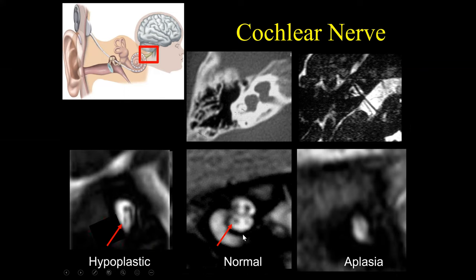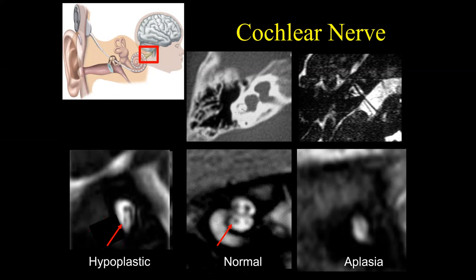On sagittal images through the internal auditory canal, with posterior to the left and anterior to the right, we identify the facial nerve superiorly, the cochlear nerve inferoanteriorly, the superior vestibular nerve, and the inferior vestibular nerve. A normal cochlear nerve is present in the first case. On the left side, the cochlear nerve is hypoplastic. In the third case, the nerve is completely aplastic — there is no nerve whatsoever. Absence of the cochlear nerve is a true contraindication to cochlear implantation, so you must specifically look for its presence.